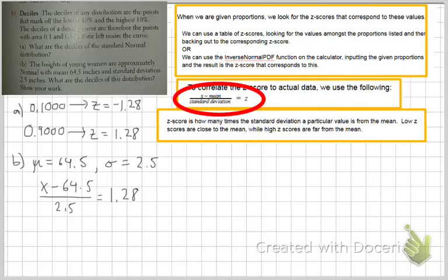That gives us x minus 64.5 is equal to 3.2. And this 3.2 value is useful because that tells, this should be a minus, x minus 64.5. The 3.2 is basically how much difference there is between our x value at the top decile and the mean.